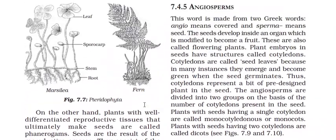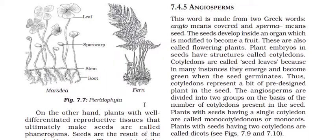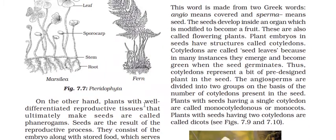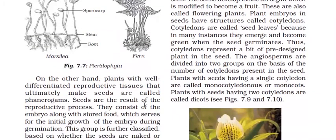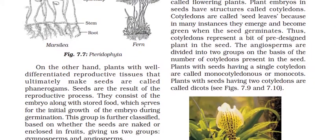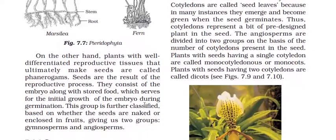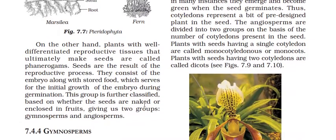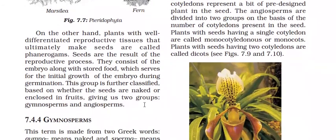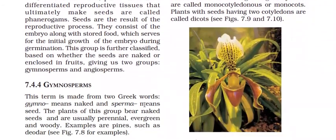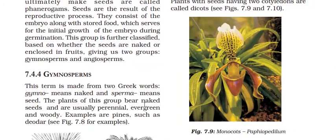The second group is angiosperms. Angio means covered and sperma means seeds, so seeds are covered and enclosed in fruits. They are flowering plants. Plant embryos in seeds have a structure called cotyledons, also called seed leaves. Some plants have one cotyledon, some have two — so angiosperms are divided into two groups: monocots (monocotyledons, single cotyledon) and dicots (two cotyledons).